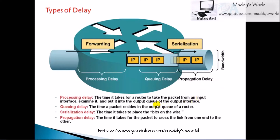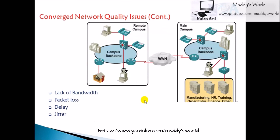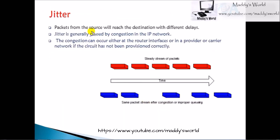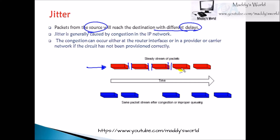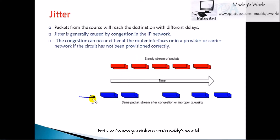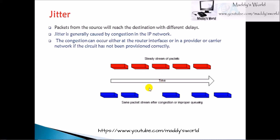The fourth problem is jitter. Jitter occurs when packets from the source reach the destination with varying delays. Normally, packets sent in a steady stream have a consistent delay between them, but with jitter there is extra, inconsistent delay. Jitter is generally caused by congestion on the network, whether at router interfaces or in the carrier network if the circuit is not working properly.